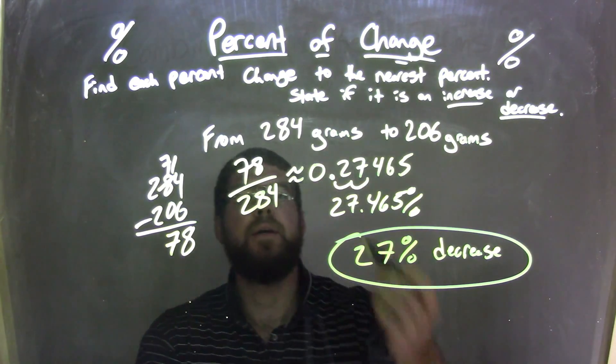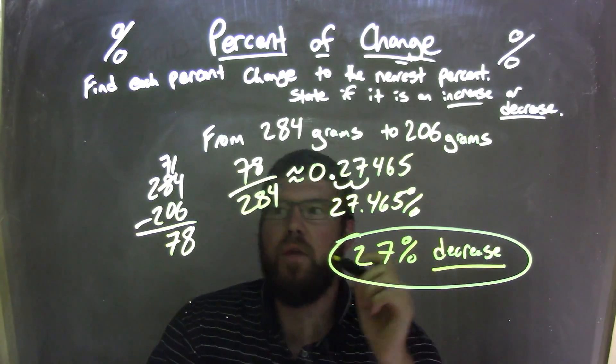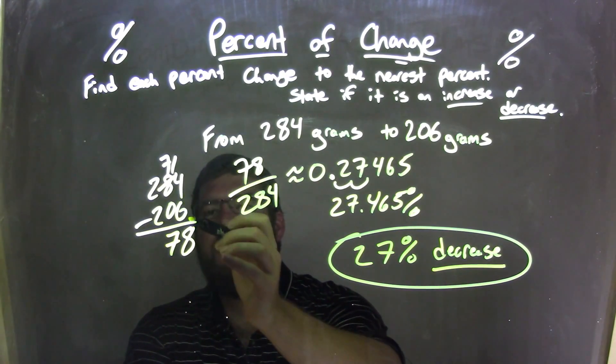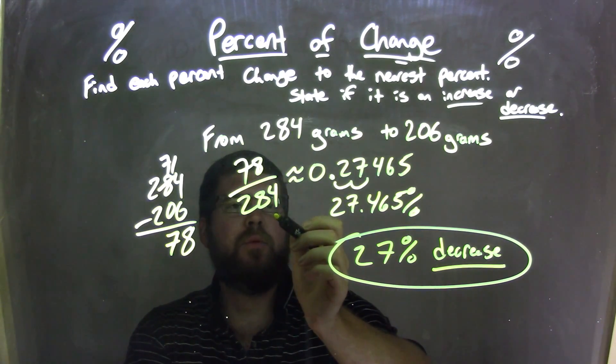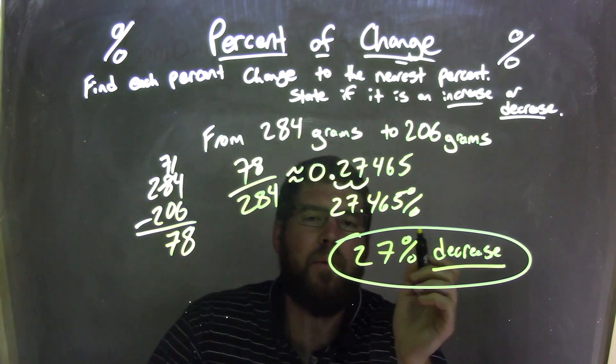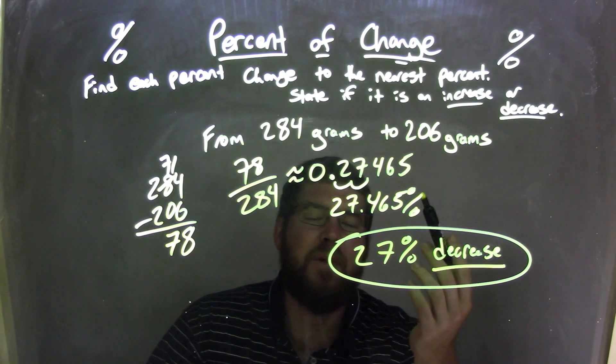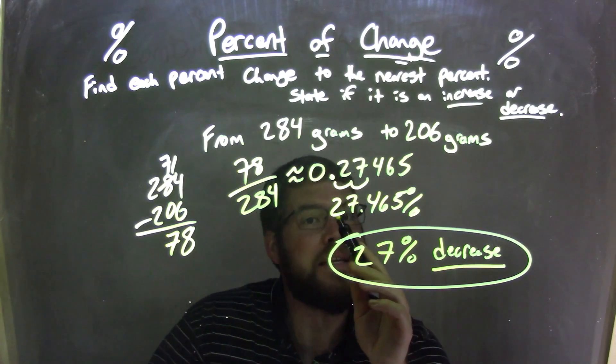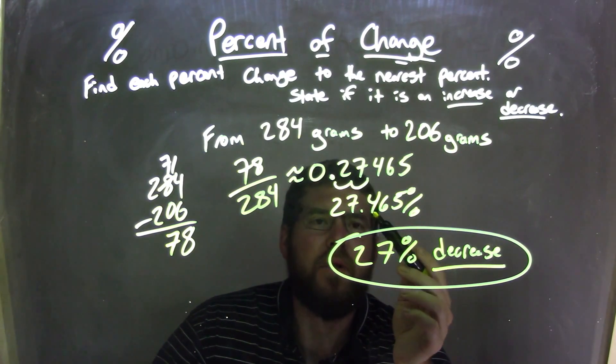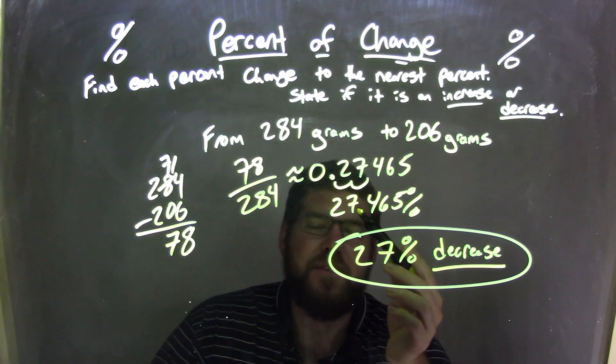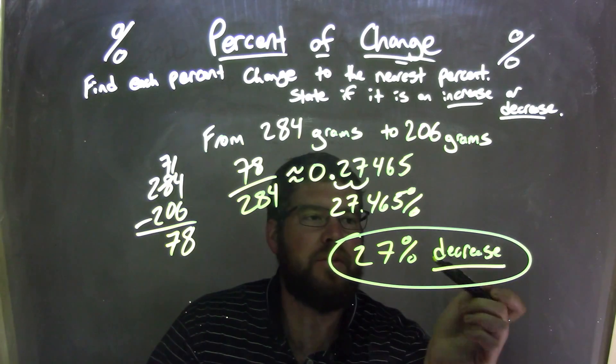So, let's recap here. We started with 284 grams or 206 grams. We noticed that was a decrease. We then subtracted the two numbers, 284 minus 206 to get 78. We took that 78 divided by the first number, which is 284. Then, approximately, we got 0.27465. So, from 0.27465, we converted that to be a percent to be 27.465%. We rounded it. We looked at the 4. The 4 causes 7 to just round down, stays a 7. And so, we got a final answer of a 27% decrease.